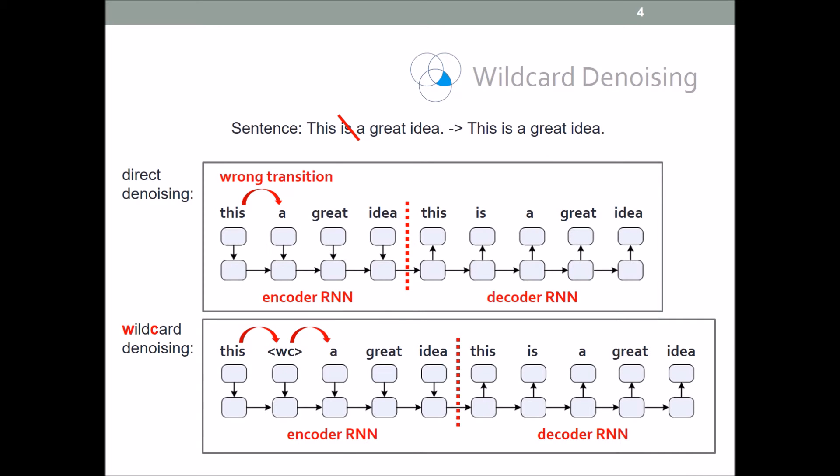So what's wildcard denoising? For example, here, denoising means recovering the original sentence 'this is a great idea' from the corrupted sentence 'is a great idea.' If we directly use denoising in RNN, the model will learn the wrong transition from the word 'this' to the word 'a.'